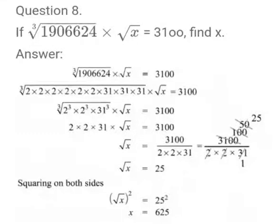Now we will see exercise 1.7.8 question. If cubic root of 1906624 into square root of x equals 3100, find x value.